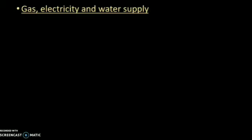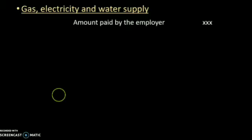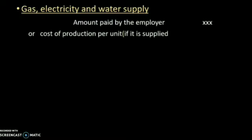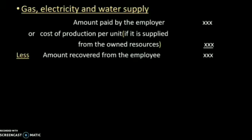How to determine the perquisite value of gas, electricity, and water supply provided by the employer to the employee. The amount paid by the employer is considered. If the amount paid by the employer is not available, the cost of production per unit is used. From this, the amount recovered from the employee is deducted to arrive at the taxable balance amount.